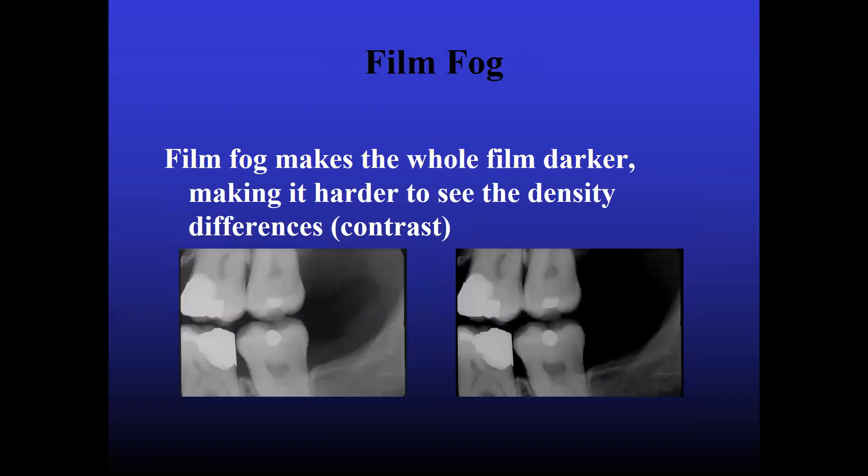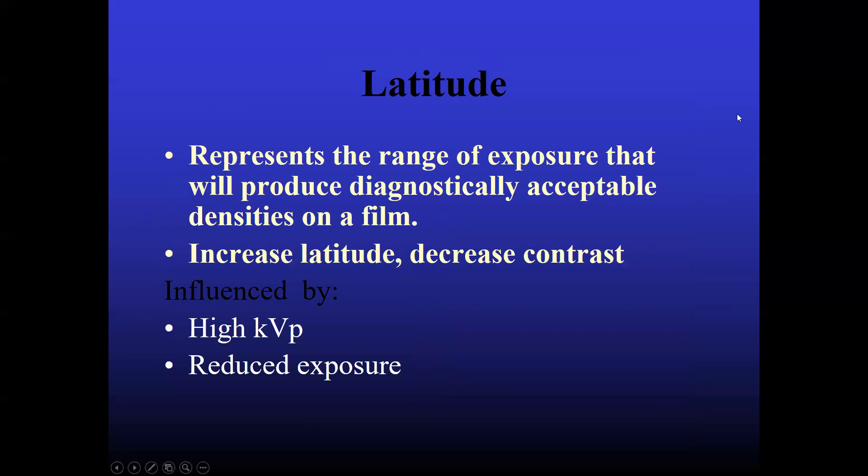Film fog makes the whole film darker, making it harder to see the density difference. On the left side you can see the density difference. See the difference. Air space is there, the soft tissue is there, and the bone is there. Here you can't, you are not able to differentiate between the air space and soft tissue. Only the bone and the arcade is there.